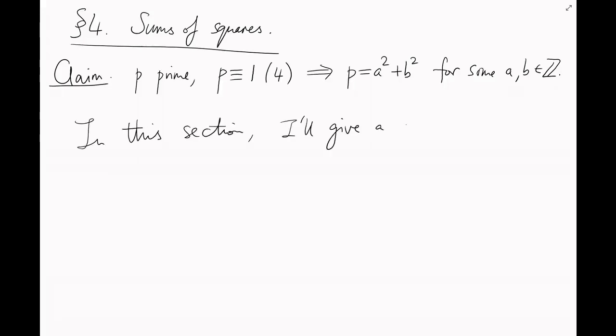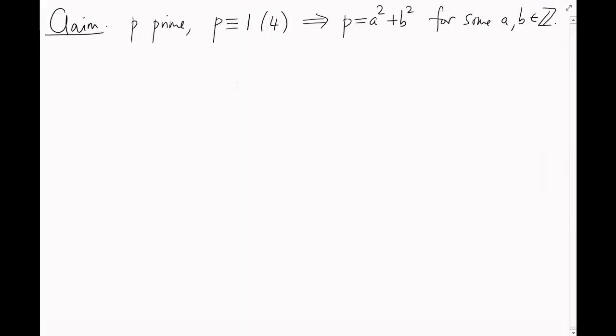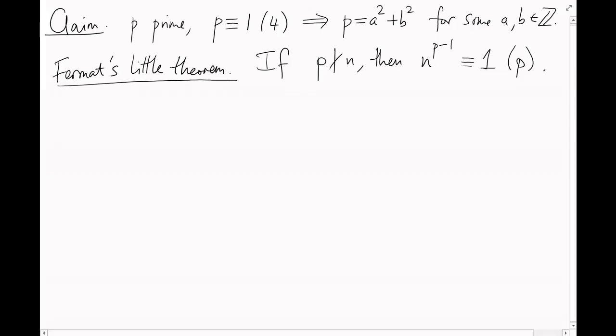First of all, a couple of lemmas. I'm going to work modulo any odd prime p for now. The first one is called Fermat's Little Theorem, and it says the following. If n is any integer not divisible by p, then n to the power of p minus 1 is equal to 1 mod p.